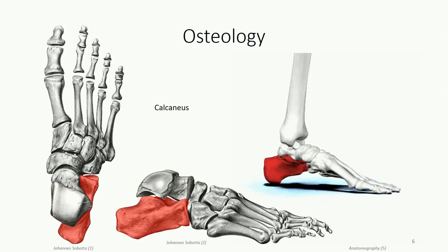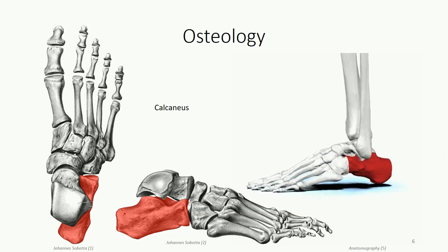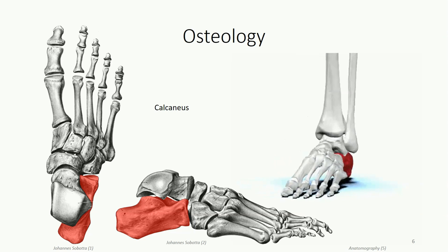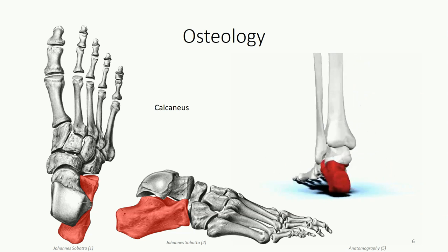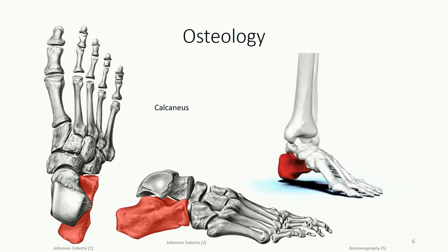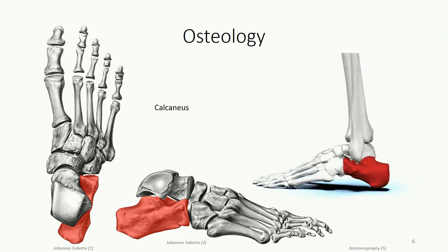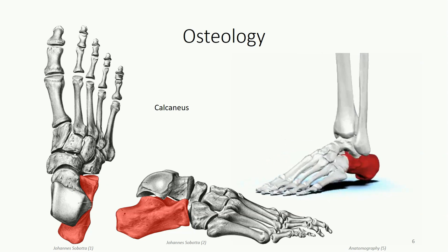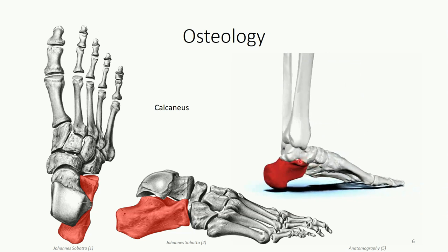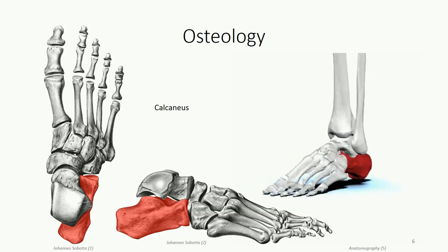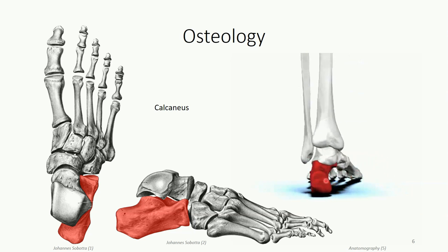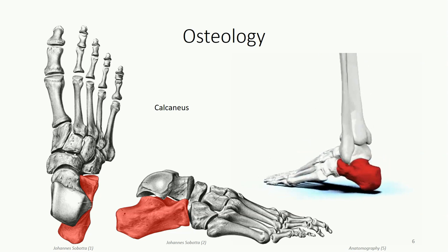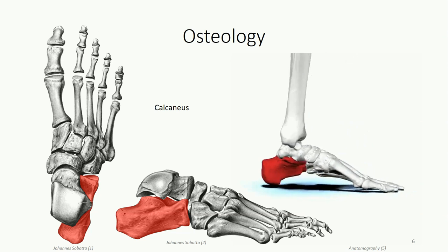Next, we have the calcaneus, also known as the heel bone. This is the largest of the tarsal bones and arguably the strongest bone in the body — it accepts the entire weight of the body through the talus and distributes it into the ground, constantly subjected to the heaviest loads. The superior surface of the anterior two-thirds articulates with the talus, including a shelf of bone known as the sustentaculum tali, which supports the medial portion of the talus. This creates a space inferior to the talus known as the tarsal tunnel, which contains and protects tendons and neurovascular structures communicating between the leg and foot.